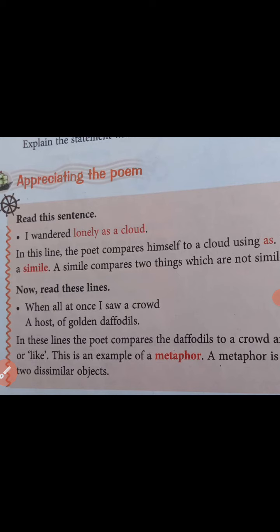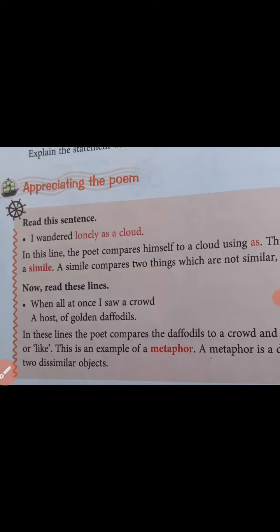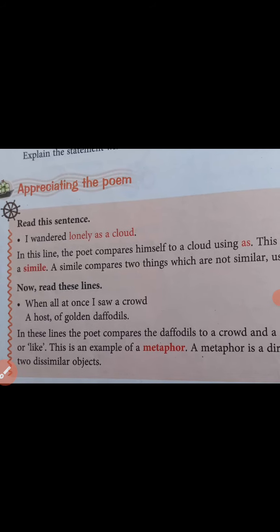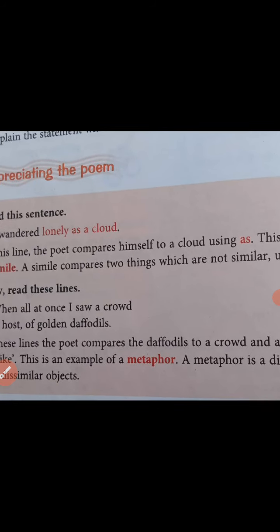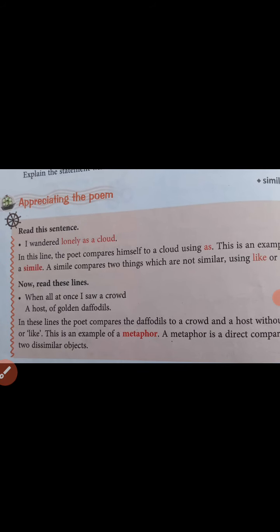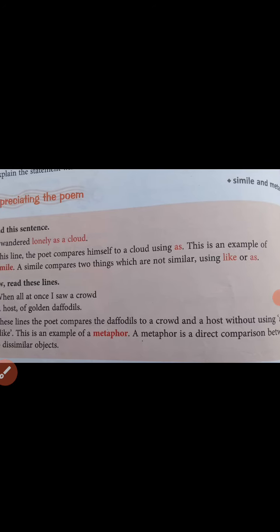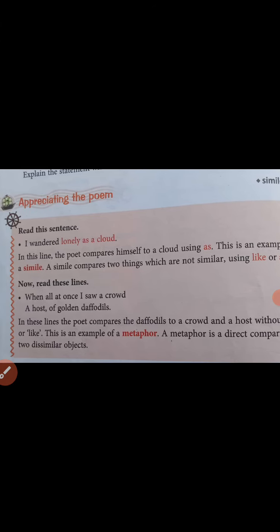When all at once I saw a crowd, a host of golden daffodils. In this line, the poet compares the daffodils to a crowd — a host — without using 'as' or 'like'. Is line mein poet ne daffodils ka comparison crowd ke saath mein kiya hai, aur woh bhi bina 'as' aur 'like' ka use kiye.